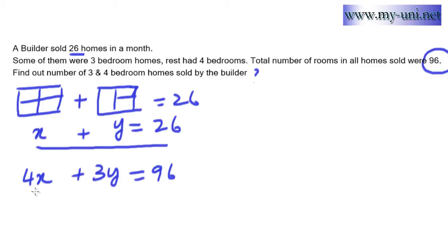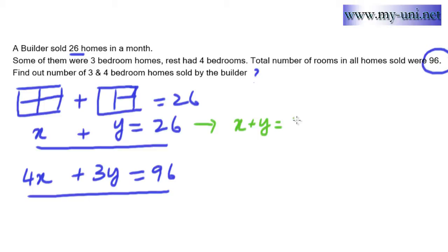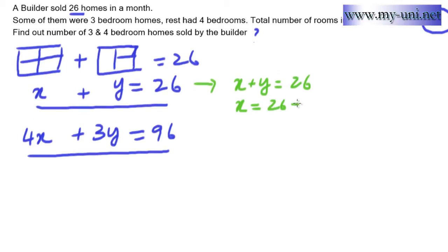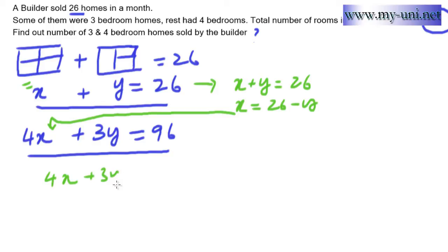Now we have two equations: x plus y equals 26, and 4x plus 3y equals 96. We can find the value of x from the first equation. From x plus y equals 26, we get x equals 26 minus y. We can now substitute this value of x into the second equation.